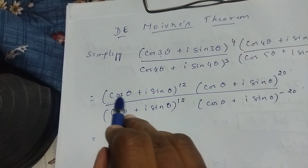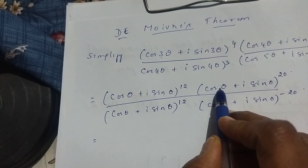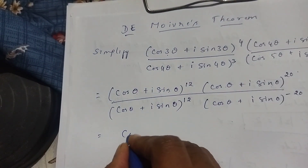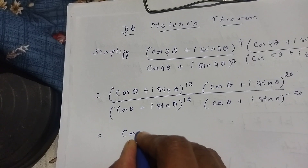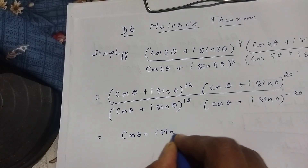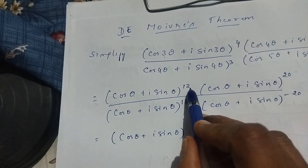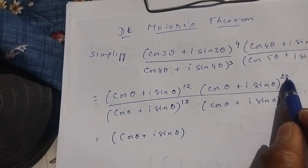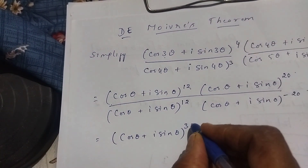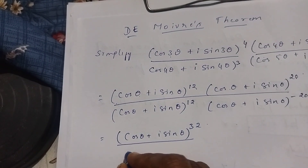Now we have cos θ + i sin θ in the numerator twice. You write only one time cos θ + i sin θ, and you add 12 and 20 — 12 plus 20 is 32.